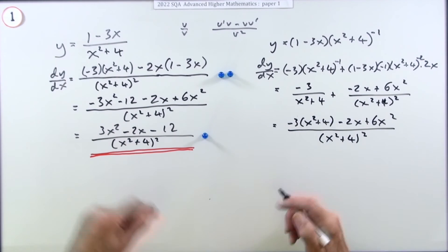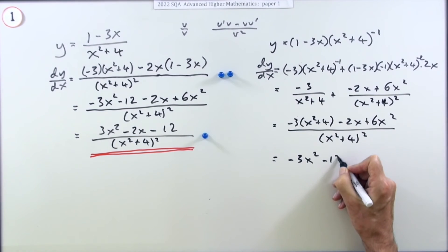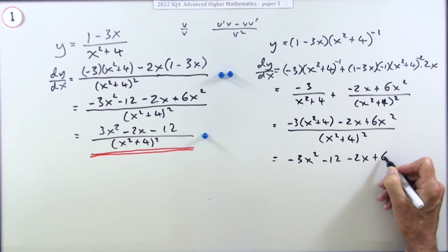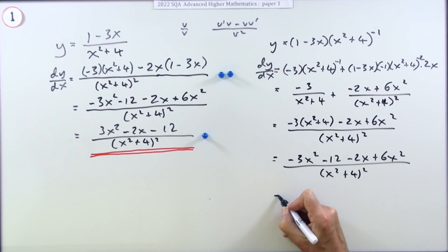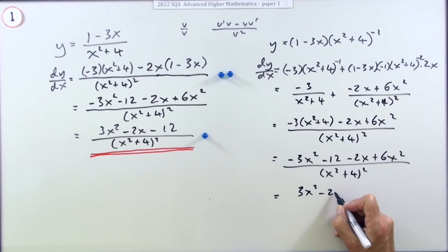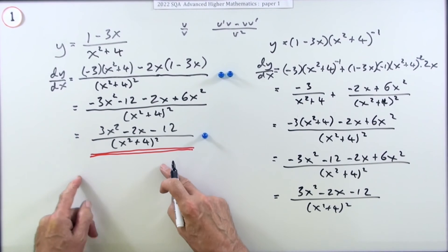Now I've got to change them into the same denominator x squared plus 4 squared. This bit's fine, but this will have to get multiplied by another x squared plus 4. So negative 3 times x squared plus 4, minus 2x plus 6x squared. You can see after all of that you're essentially just down to that first line, so obviously the rest follows. That's why you use the quotient rule.